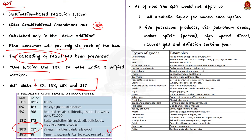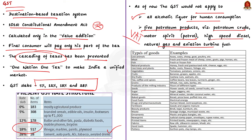GST applies on all goods other than alcoholic liquor for human consumption and five petroleum products — petroleum crude, motor spirit, high-speed diesel, natural gas, and aviation turbine fuel. These are taxed under central excise duty, central sales tax, and value-added tax. There are also some goods and services exempted from GST.